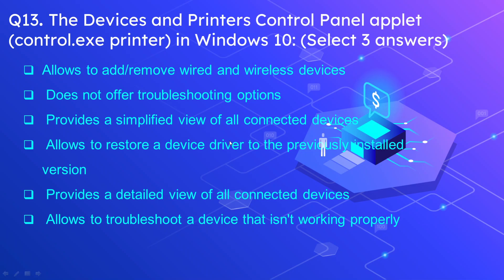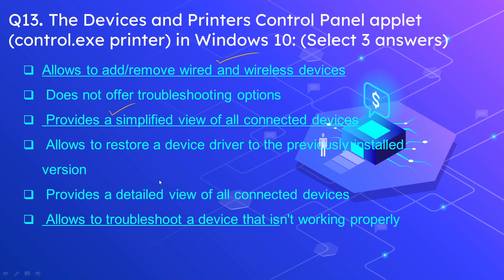Question number 13: The Devices and Printers control panel applet (control.exe printers) in Windows 10 — select three correct options. The correct options are: it allows you to add and remove wired and wireless devices; it provides a simplified view of all connected devices; and it allows you to troubleshoot a device that is not working properly.